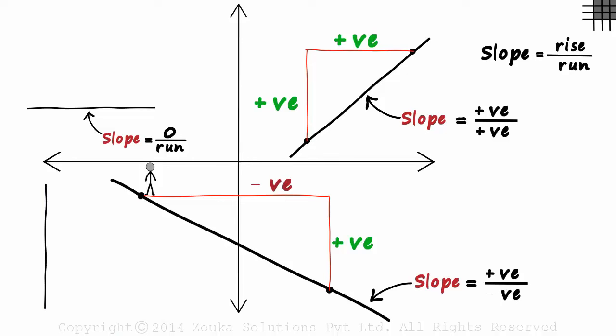What will be the slope of this line which is parallel to the y axis? It's simple. You cannot run left or right after marking two points. The run is zero. So the slope will be rise over zero and anything over zero is undefined.